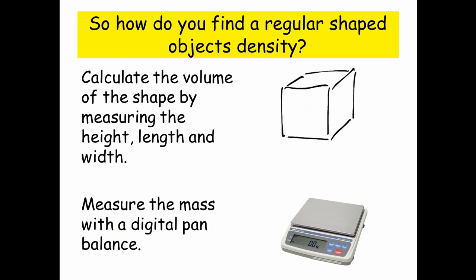To calculate the volume of the shape, measure the height, length, and width. Then we just simply put into our formula that the volume is equal to the height times the width times the length. And we measure the mass with a digital pan balance.